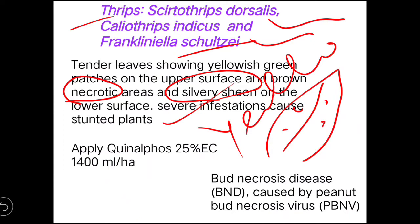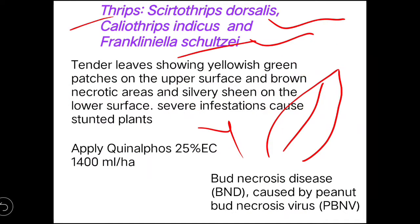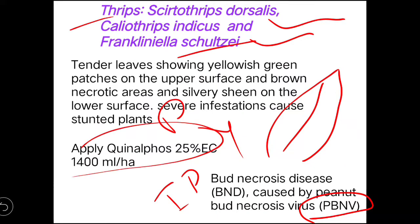The lower surface of the leaf becomes silver colored — a silvery shine forms. Apart from direct damage, the indirect damage is that thrips transmit Peanut Bud Necrosis Virus. Remember: Bud Necrosis Virus is transmitted by thrips, while Rosette Virus and Stripe Virus are transmitted by aphid. You can apply quinolphos for management.